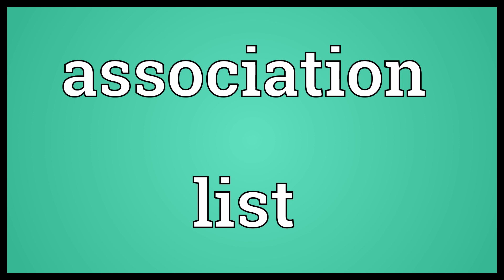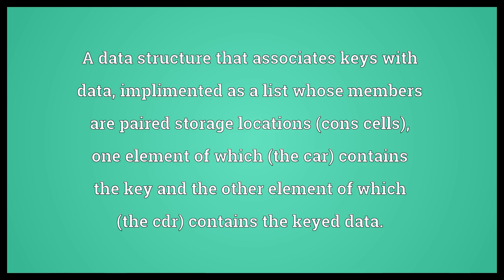Association List: A data structure that associates keys with data, implemented as a list whose members are paired storage locations, cons cells. One element of which, the car, contains the key, and the other element of which, the CDR, contains the data.